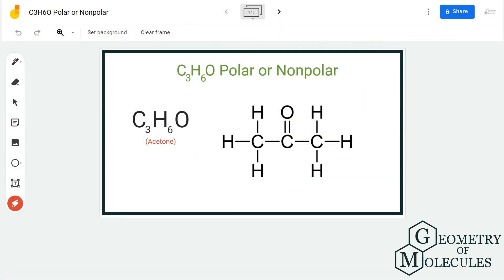Hi guys, today in this video we are going to find out if C3H6O, or what is also known as acetone, is a polar or nonpolar molecule. To understand its polarity, we are first going to look at its Lewis structure, followed by its shape, and then check if there is a net dipole moment in this molecule.